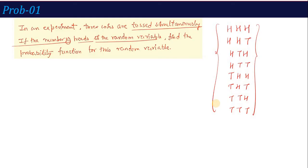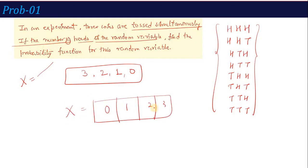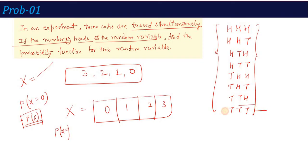The problem says the number of heads is the random variable. Looking at the sample space, the possibilities for number of heads are 0, 1, 2, or 3. So if x denotes the random variable for number of heads, x can take values 0, 1, 2, 3. The probability of 0 heads: there is only one combination (TTT) out of 8 total, so P(0) = 1/8. For 1 head, there are 3 possible cases, so P(1) = 3/8.